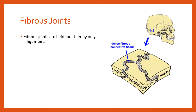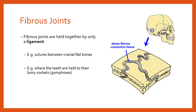Fibrous joints are held together by only a ligament. Good examples include the sutures between the cranial flat bones — there's almost no movement whatsoever. A second example is where the teeth are held to their bony sockets, called gomphoses. Another example would be where the radius and ulna meet and the tibia and fibula meet — the radioulnar and tibiofibular joints, called syndesmoses. But there's no real movement; they're just two separate bones held in place by a ligament.